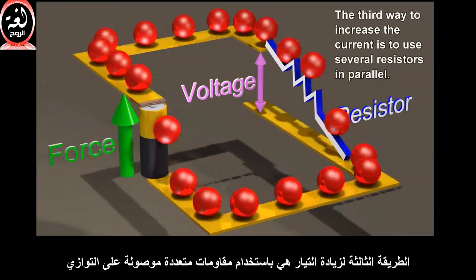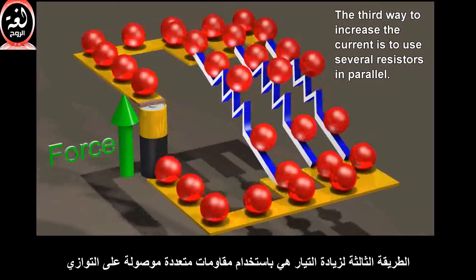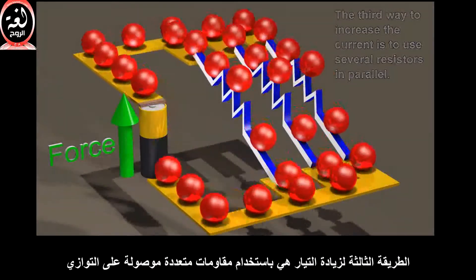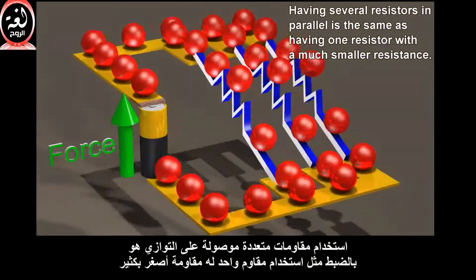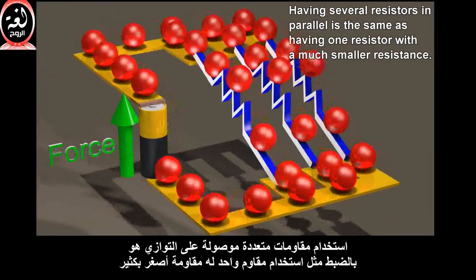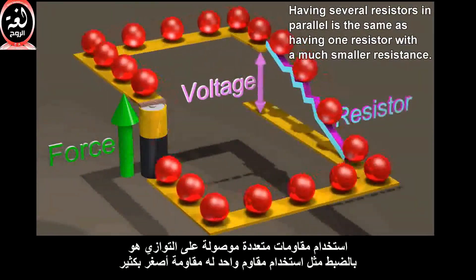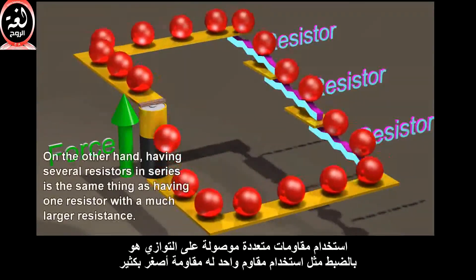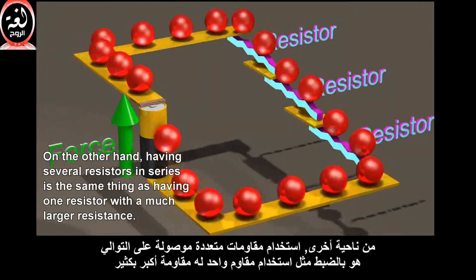The third way to increase the current is to use several resistors in parallel. Having several resistors in parallel is the same as having one resistor with a much smaller resistance. On the other hand, having several resistors in series is the same thing as having one resistor with a much larger resistance.